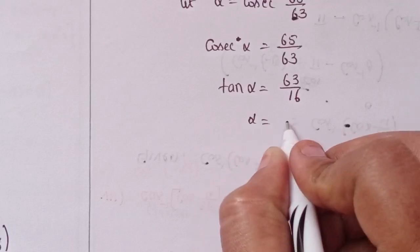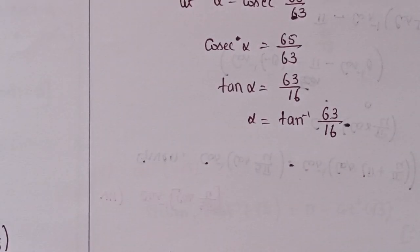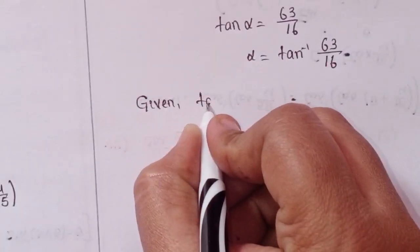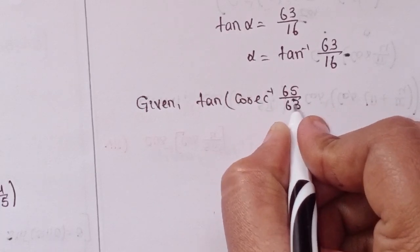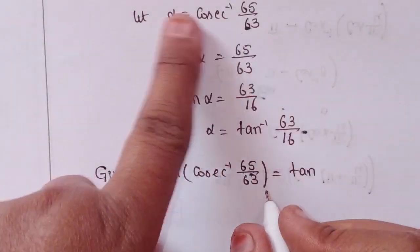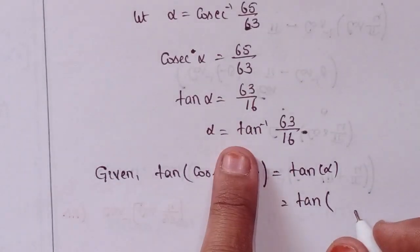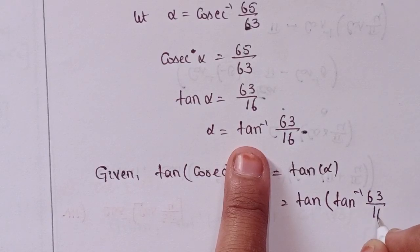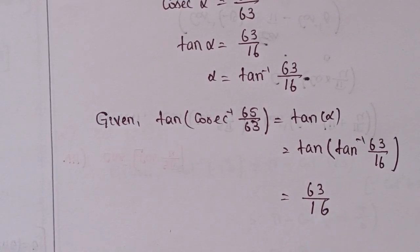Therefore alpha equals tan inverse 63 by 16. Given tan of cosecant inverse 65 by 63 equals tan of alpha, which in terms of tan is tan inverse 63 by 16. These two cancel, so 63 by 16 is the solution.